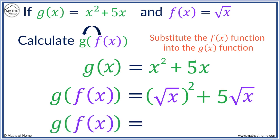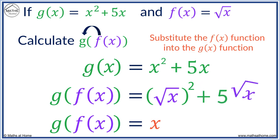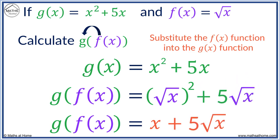We now can simplify. The square root of x and the square functions are inverse functions, which can cancel out. The square root of x squared is just x. We then have plus 5 square root of x. So g of f of x equals x plus 5 square root of x.